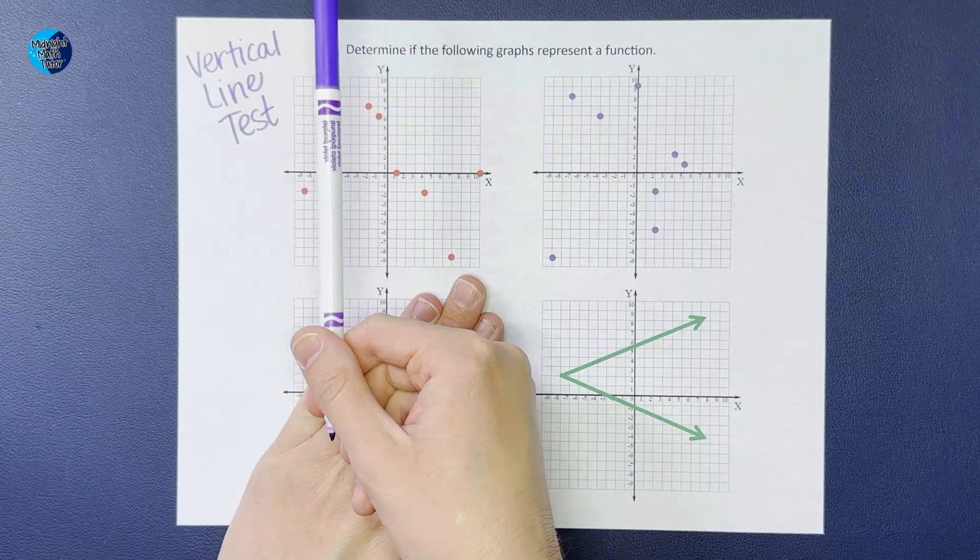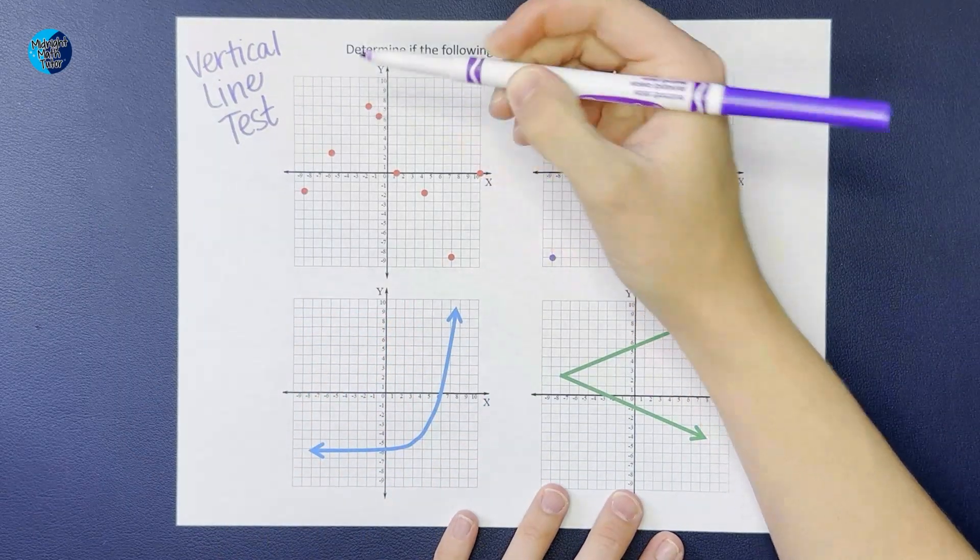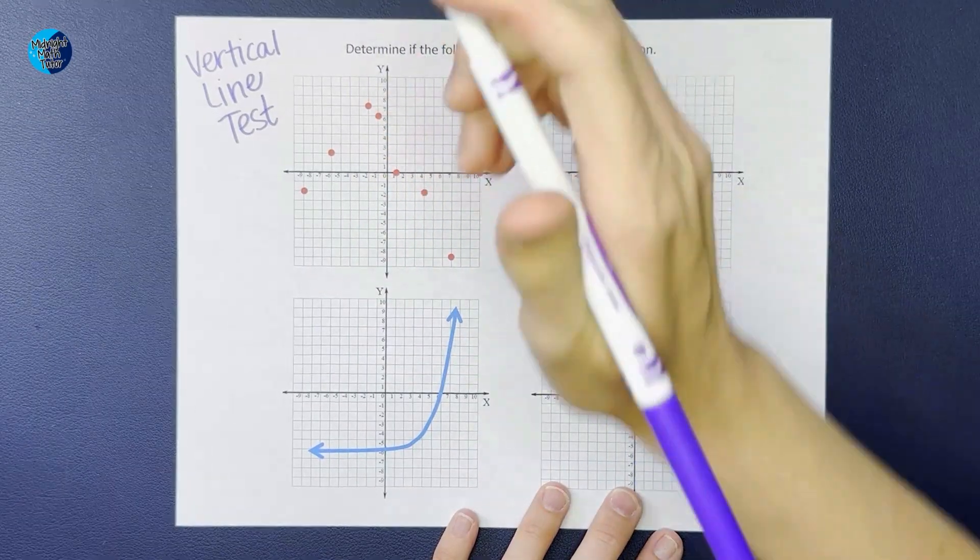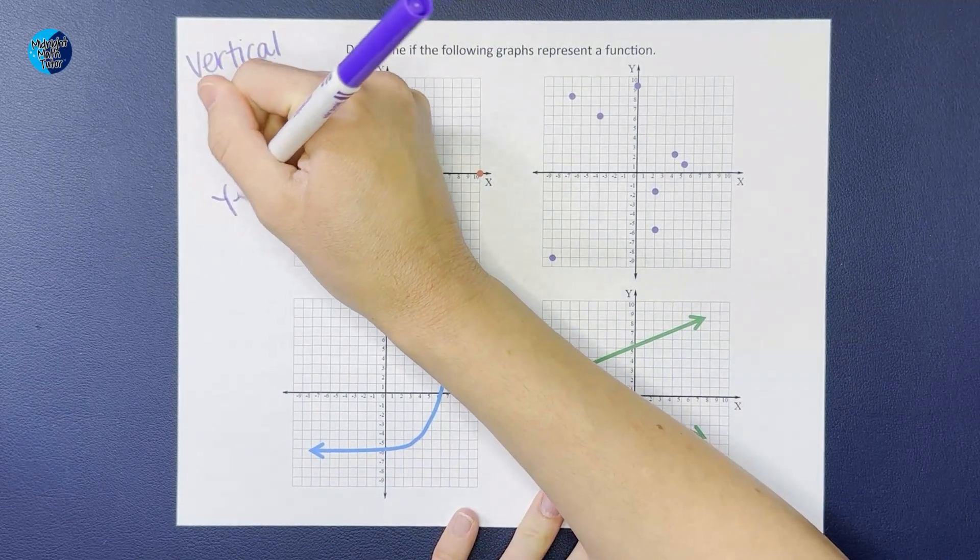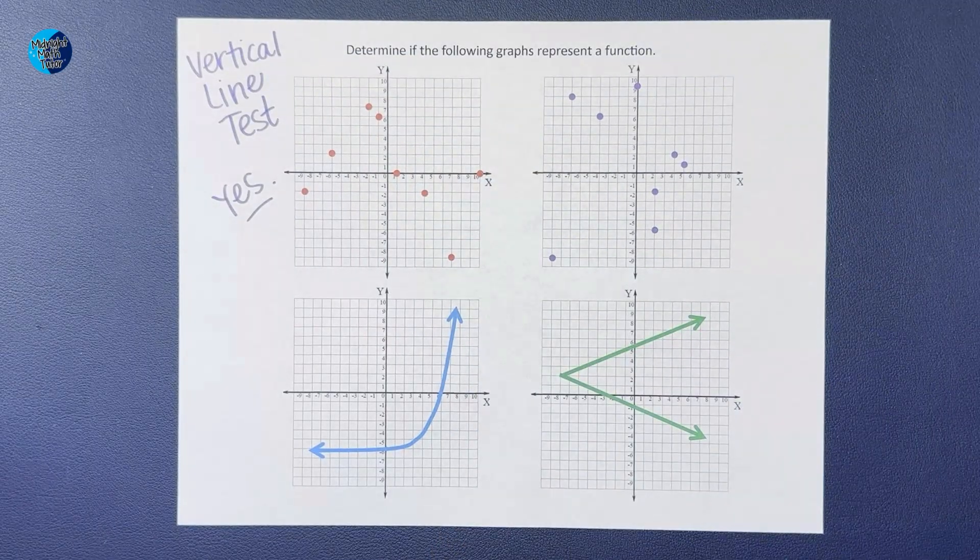If this one was moved over, you'd see that it would cross two and it would not be a function, but that one's right there. So this one passes the vertical line test, so yes it is a function.